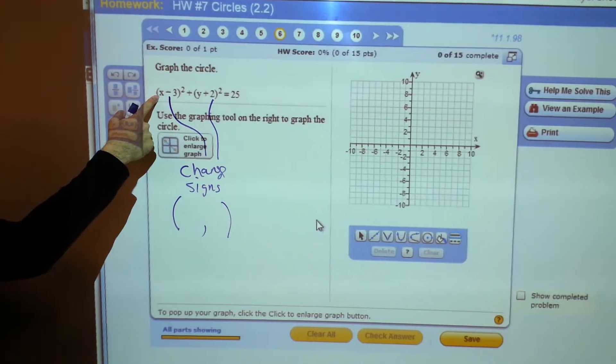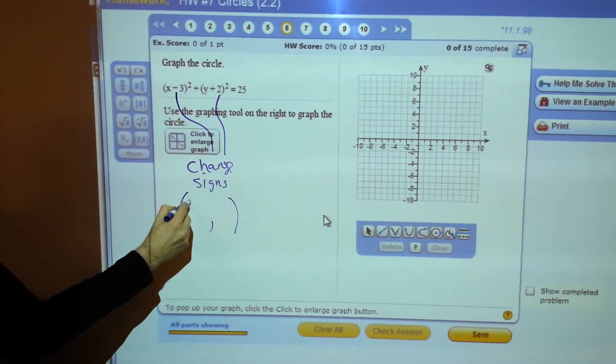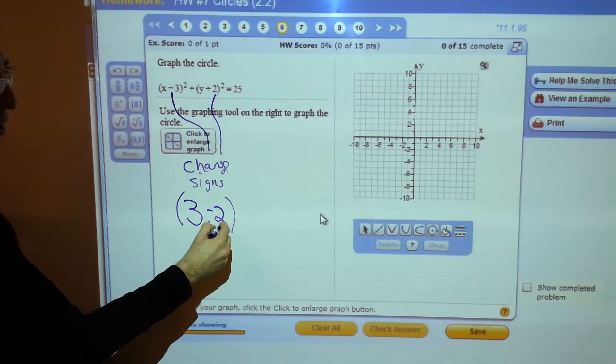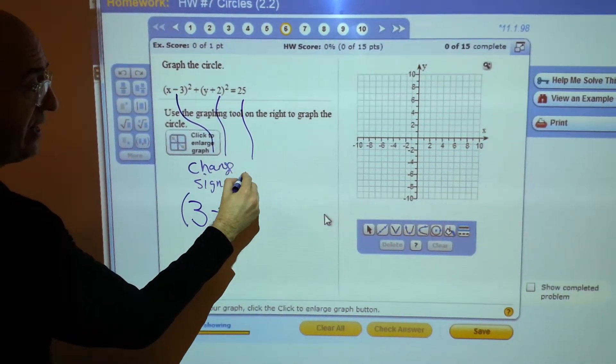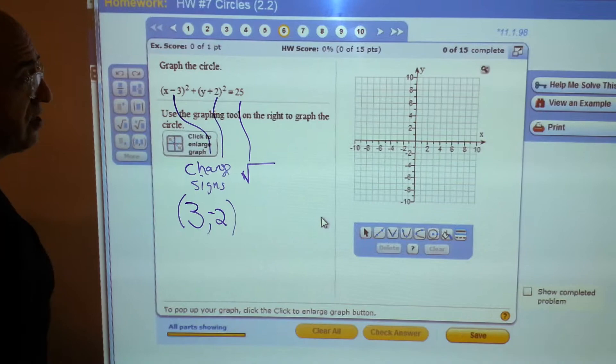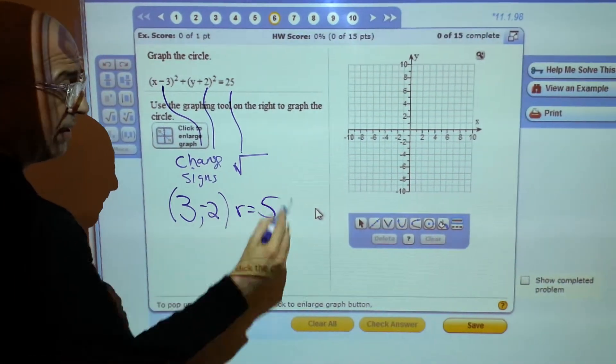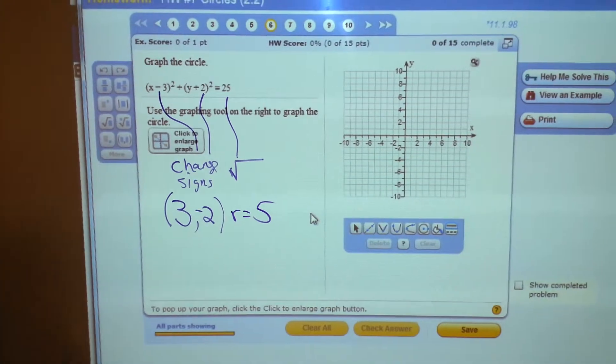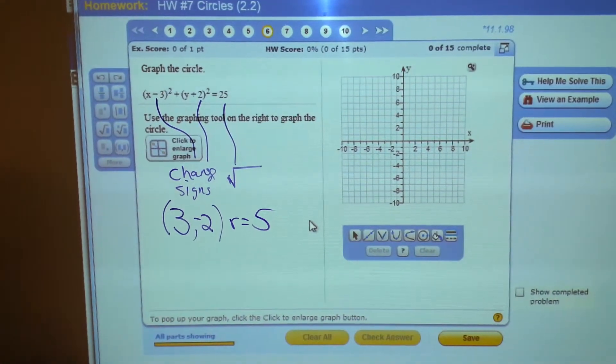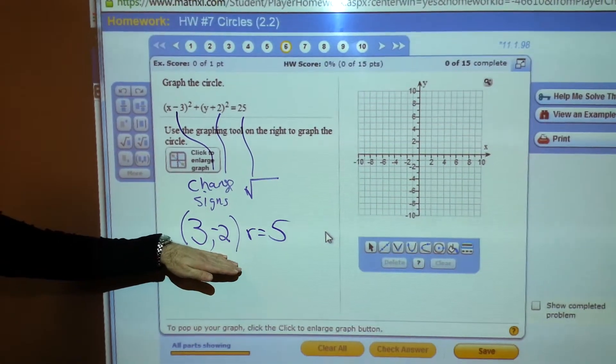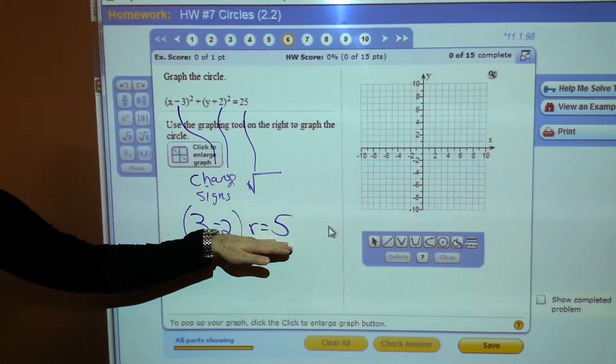So, changing the sign on the number in the parenthesis with x, that's a positive 3 and a negative 2, and then to get the radius, you take the square root of that last number. The center and radius are what you're going to need in order to graph a circle. This is a circle that's centered at 3, negative 2, with a radius of 5.